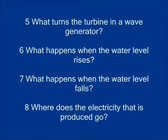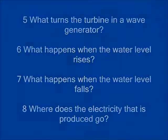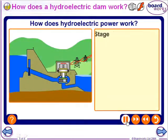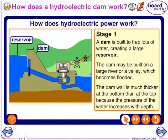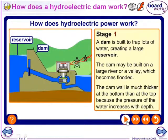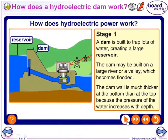Lastly, hydroelectric. A dam is built to trap lots of water, creating a large reservoir. The dam may be built on a large river or a valley which becomes flooded. The dam wall is much thicker at the bottom than at the top because the pressure of the water increases with depth.